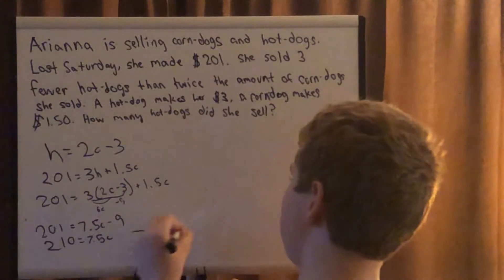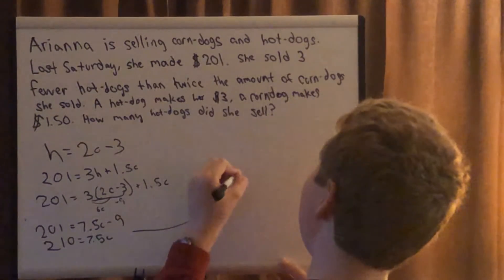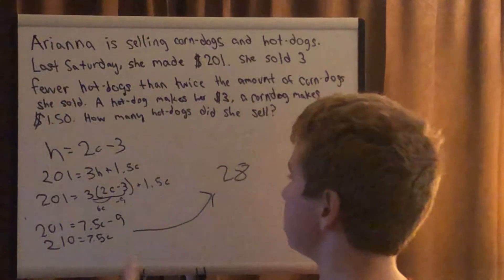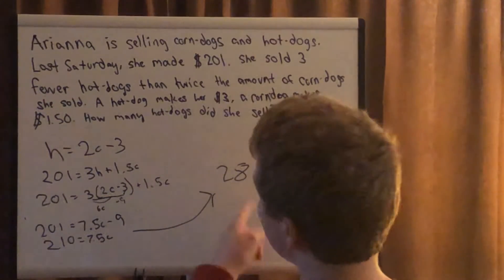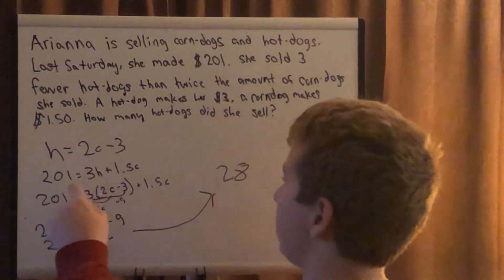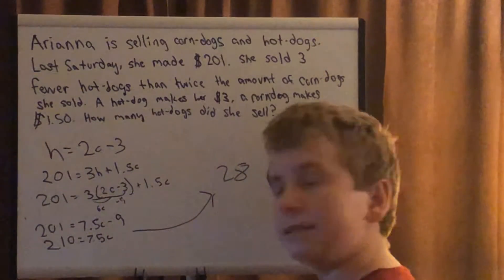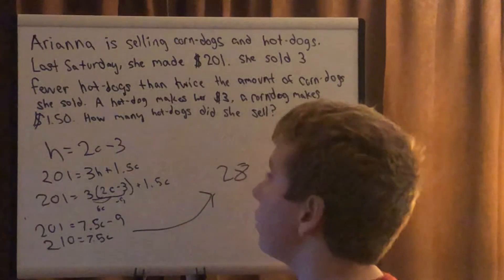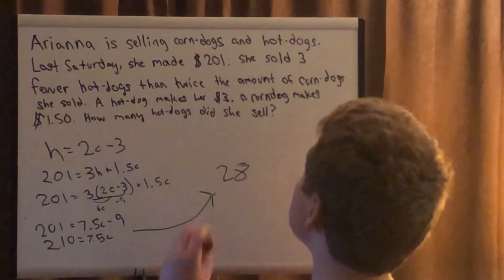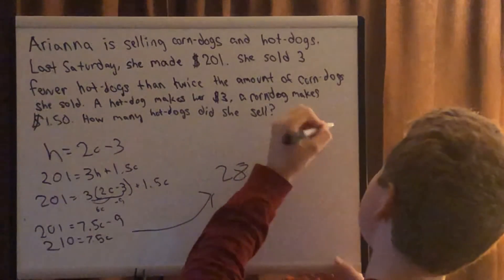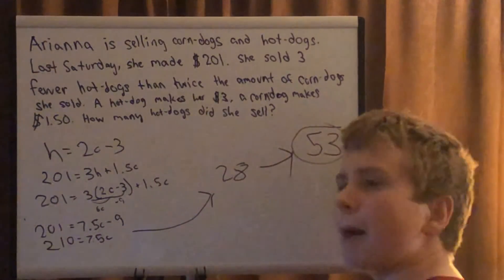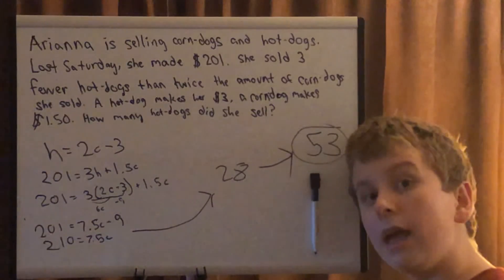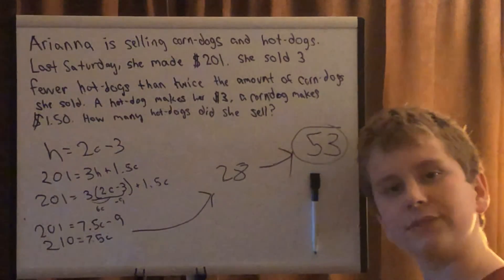Dividing both sides by 7.5 gives us c equals 28 — that's our number of corn dogs. Now we plug 28 into the original equation h equals 2c minus 3: h equals 2 times 28 minus 3, which is 56 minus 3, giving us h equals 53. So she sold 53 hot dogs. Math Made Easy fans, smash like, hit the notification bell, and for now my name is Math Made Easy — have a nice Friday night!